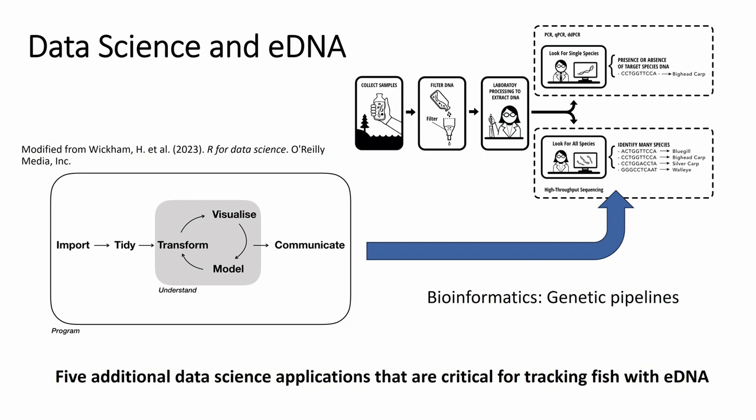This talk is really about data science — eDNA is the conduit to discuss it. When we talk about data science, most people think about the bioinformatics pipeline: taking all the sequence data from high-throughput sequencing and matching it to known species reference databases to say which species was detected. That has dominated the data science conversation in the eDNA world since inception. But I want to talk about five additional data science applications that are critical.